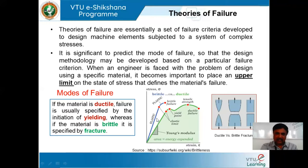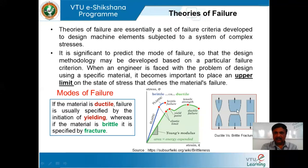For brittle materials, soon after the proportionality limit the material deforms without showing any yielding point and breaks directly, so the ultimate strength is taken as the upper limit. These recordings are observed during a simple tensile test on a UTM. In ductile materials a cup-and-cone fracture formation is seen, while brittle materials show a flat fracture. These concepts are very important in applying the theories of failure.